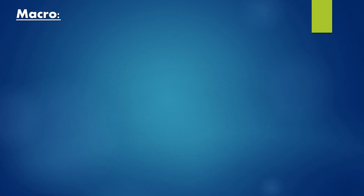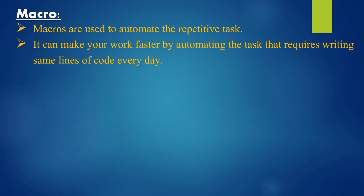First, let's see what is a macro. Macros are used to automate repetitive tasks. They can make your work faster by automating tasks that require writing the same lines of code every day. So a macro can reduce the number of lines we write for a particular task, but at the same time it may not reduce the time required to execute the code.